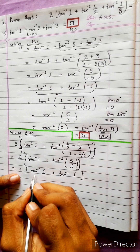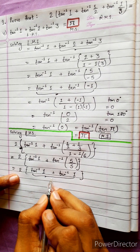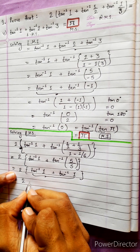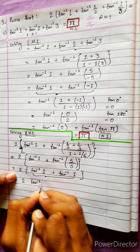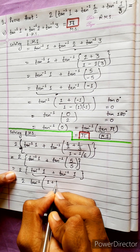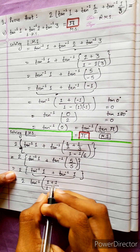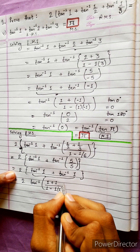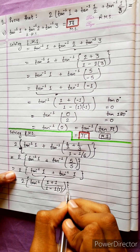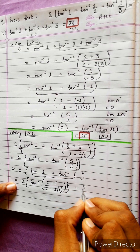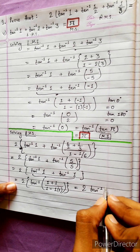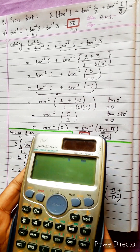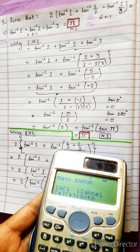Now use the formula for tan⁻¹(a) + tan⁻¹(b) = tan⁻¹((a+b)/(1−ab)). Here a = b = 1, so 1 − ab = 1 − 1 = 0. The result is tan⁻¹(2/0), which is undefined — a mathematical error.